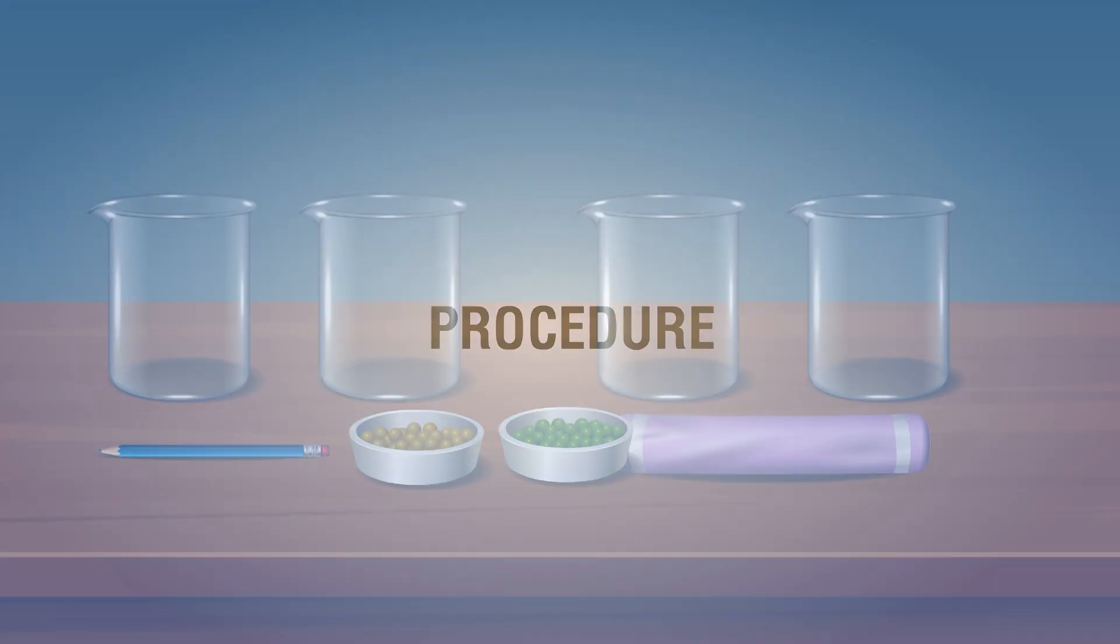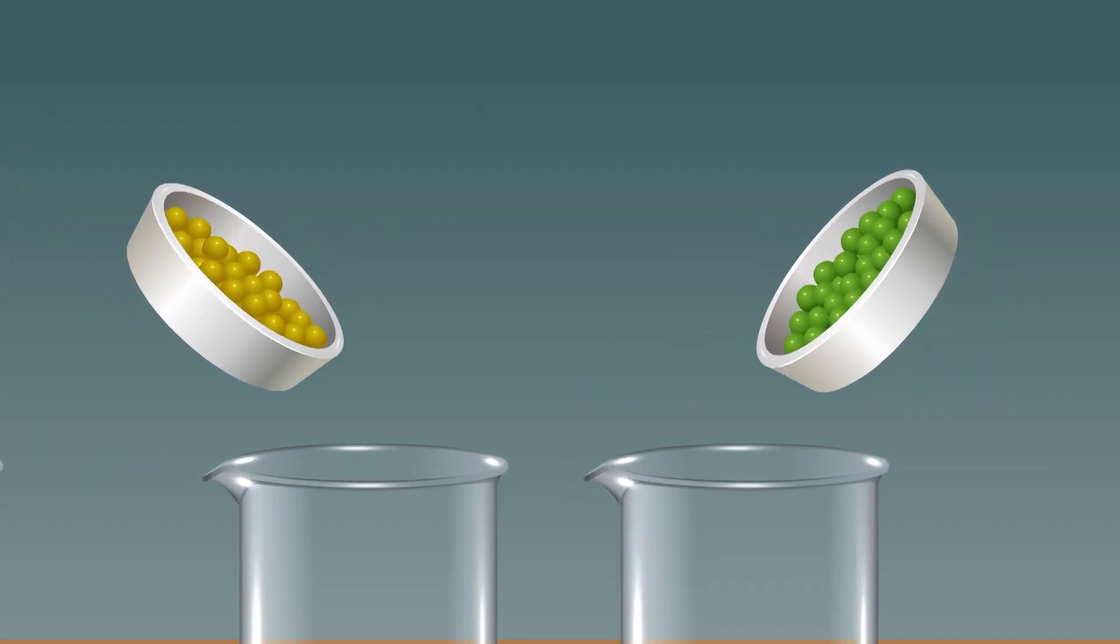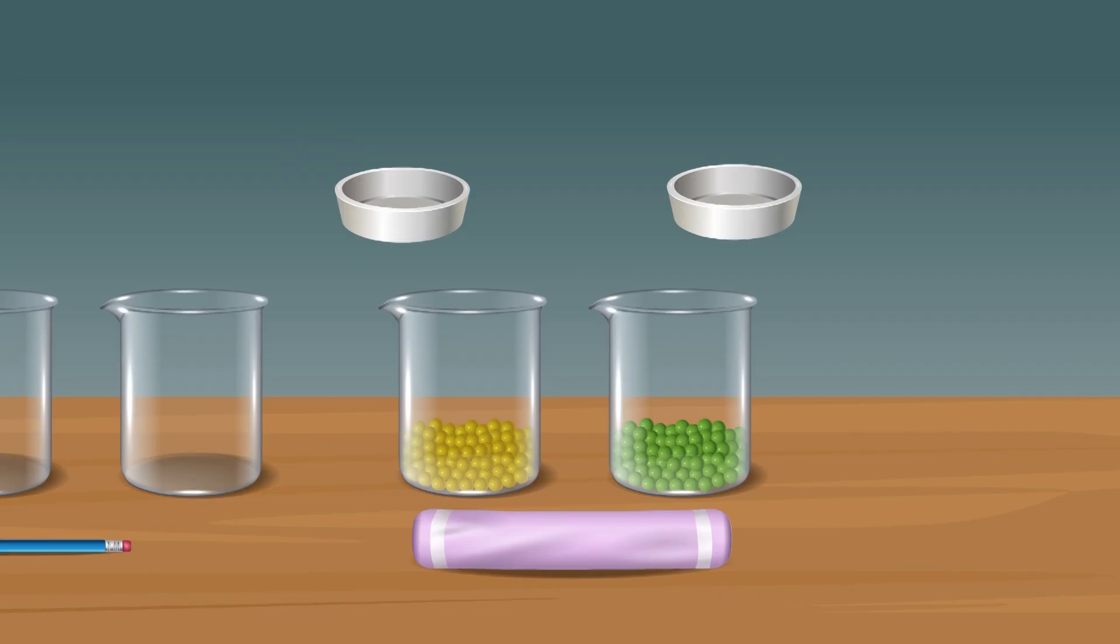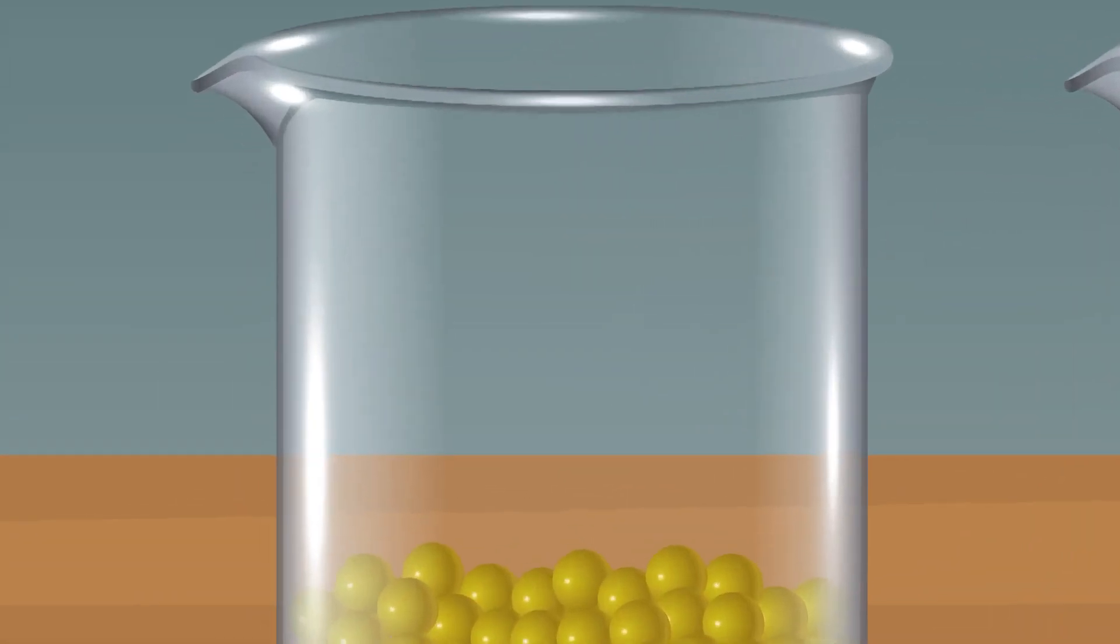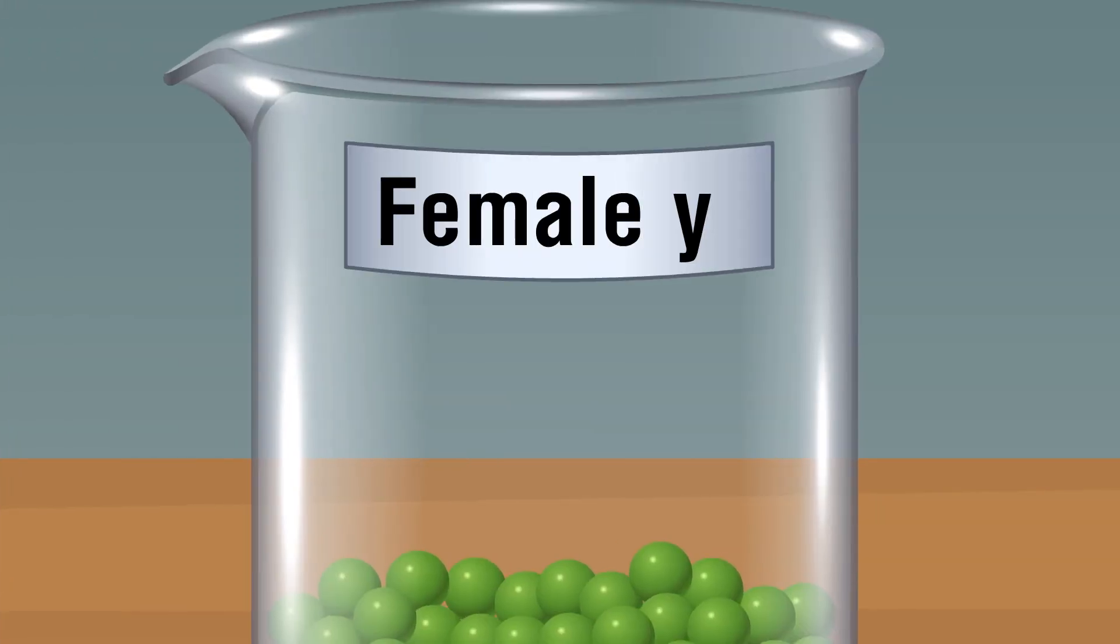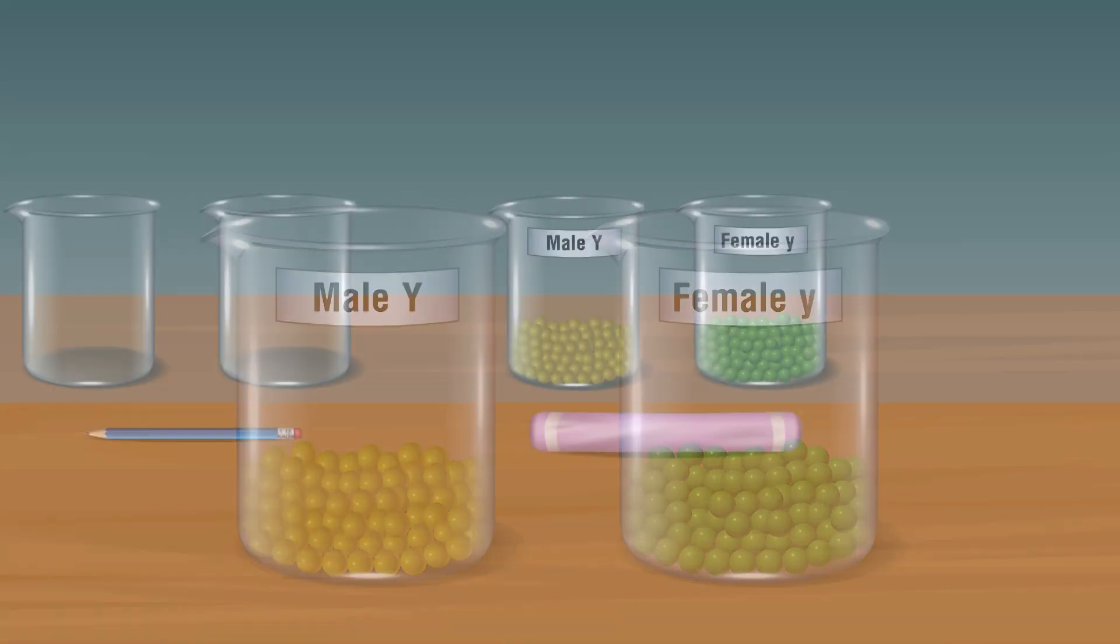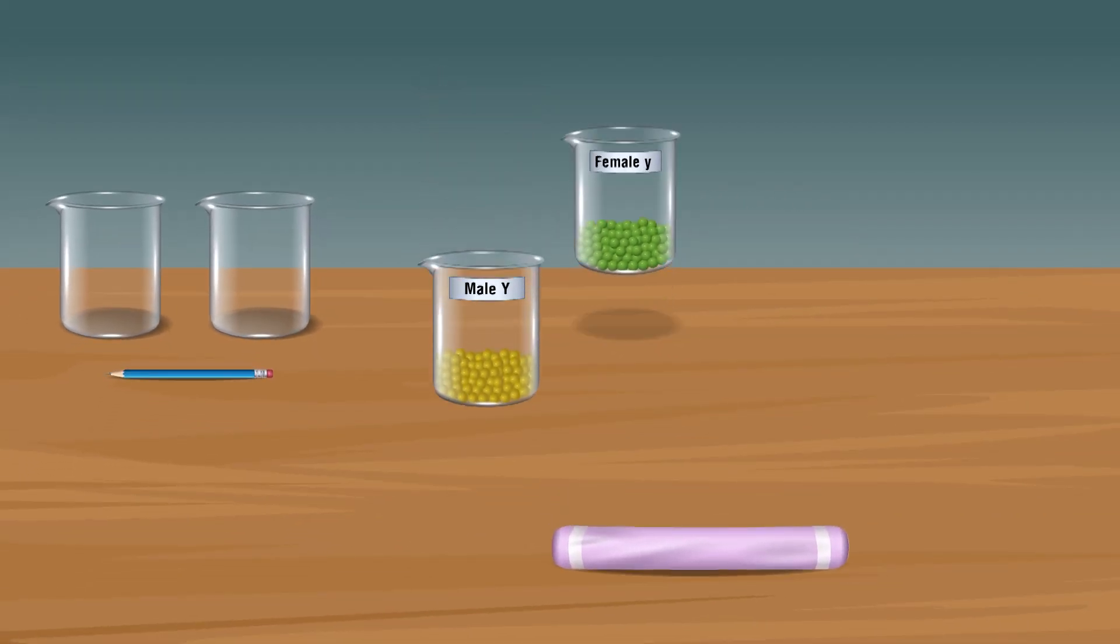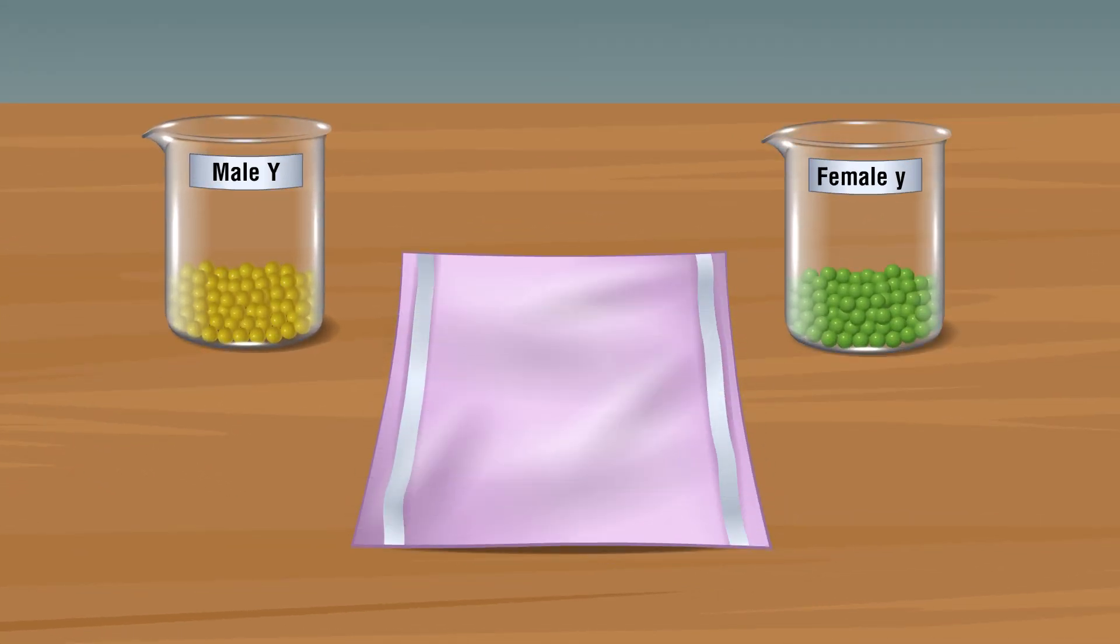Procedure: Take 64 yellow and green beads in 2 separate beakers. Label the beakers as yellow for male represented as capital Y, and green for female represented as small y. Place the beakers on the left and right side of the table and in the middle spread the hand towel.